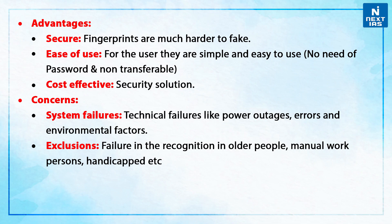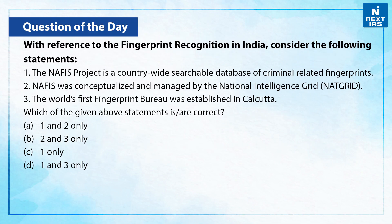If we talk about the concerns, first of all, system failures — including technical failures like power outages, errors, and environmental factors — may lead to challenges. Secondly, there may be exclusions: failure in recognition in older people, manual workers, and handicapped individuals.